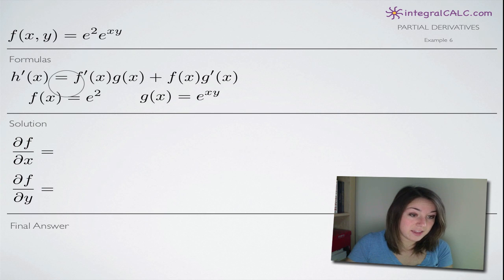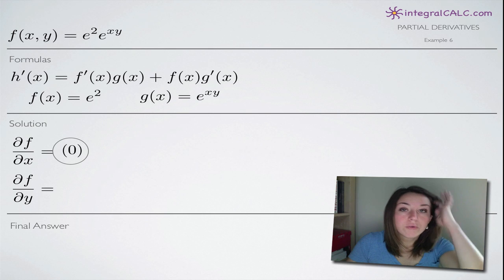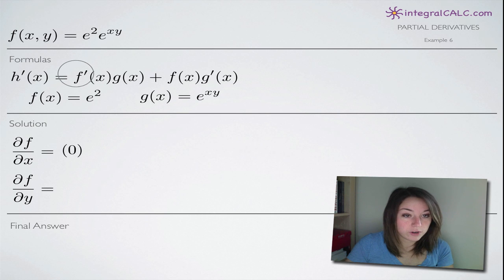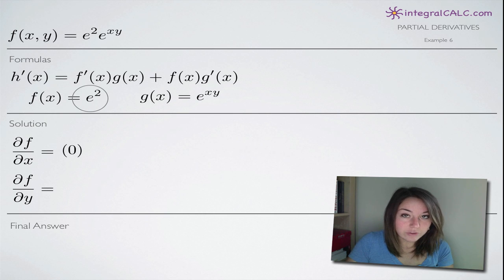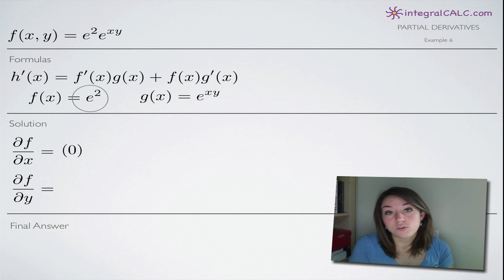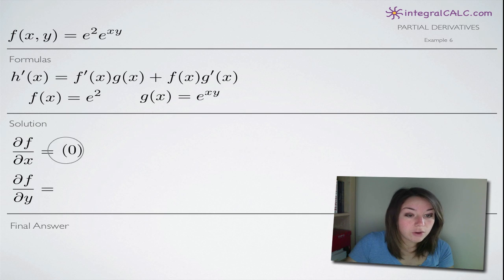We're going to need to take the partial derivative with respect to both x and with respect to y, going through term by term in the product rule form. The first thing our product rule formula tells us is that we need the derivative of f of x. We have f of x equals e squared. Taking the derivative of e squared — e squared is simply a constant because e is a constant number, something like 2.7. When we square that, we get a constant number, and the derivative of any constant is simply zero. So we put zero here as the first component of our partial derivative with respect to x.